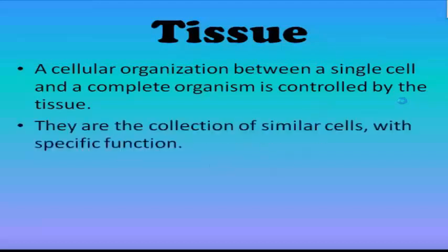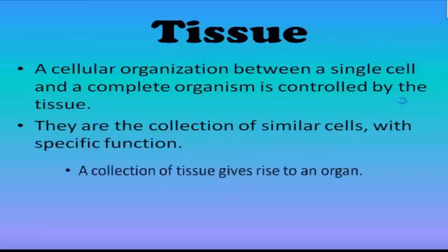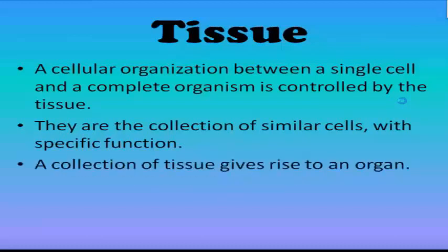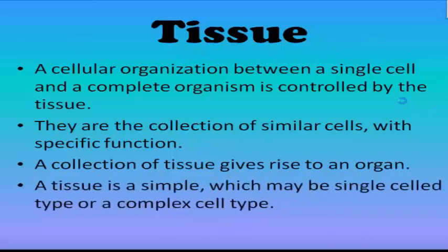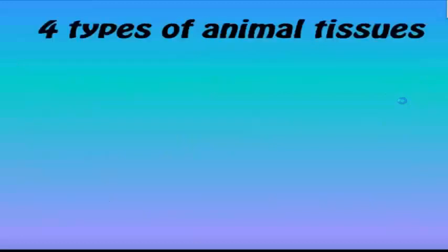Tissues are the collection of similar cells with a specific function. A collection of tissues gives rise to an organ. A tissue is a unit which may be a single cell type or a complex cell type.